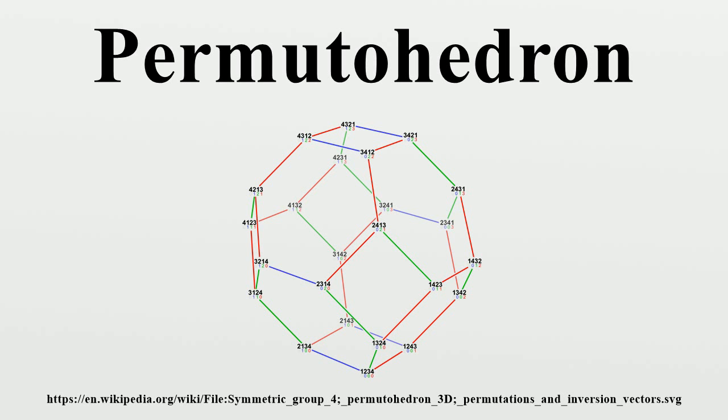The permutohedron has one facet for each non-empty proper subset S of {1, 2, 3, ..., n}, consisting of the vertices in which all coordinates in positions in S are smaller than all coordinates in positions not in S.